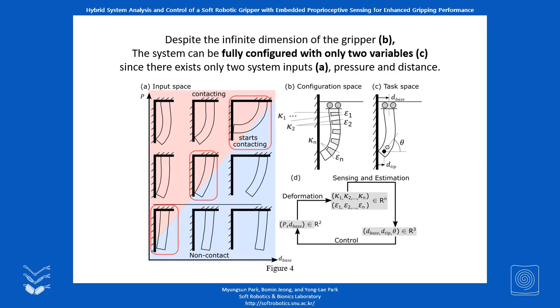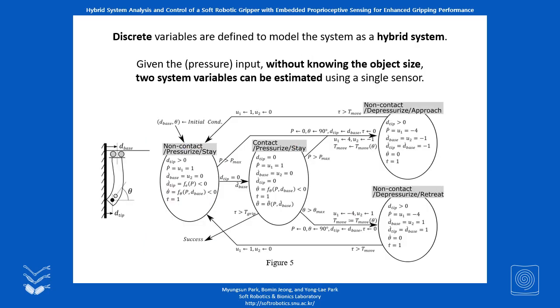We analyzed the system with a hybrid model which includes three discrete variables to indicate contact or non-contact, pressurizing or not, and how the actuator is moving.